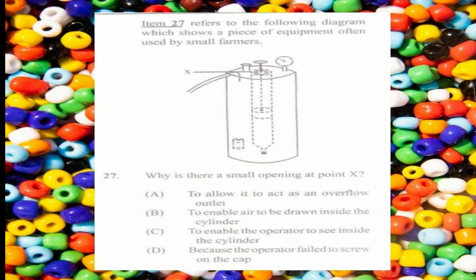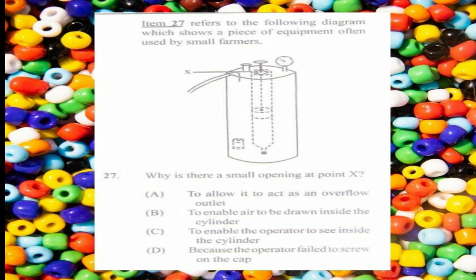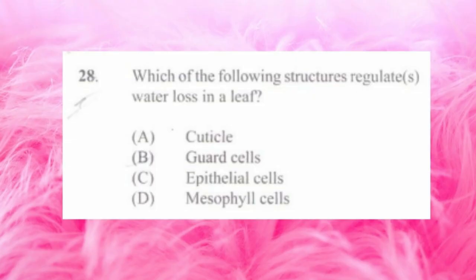Question number twenty-seven refers to a diagram showing equipment used by small farmers. Why is there a small opening at point X? The answer is b) to enable air to be drawn inside the cylinder. The diagram shows a sprayer, and X points to the pump. The pump's purpose is to force air inside the sprayer to build up pressure to spray out the liquid.